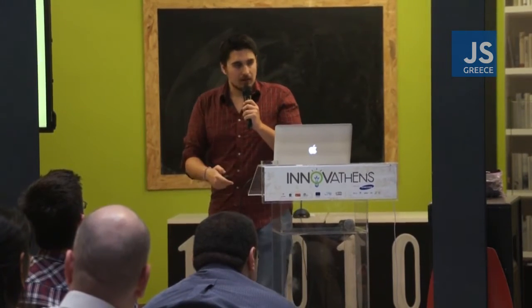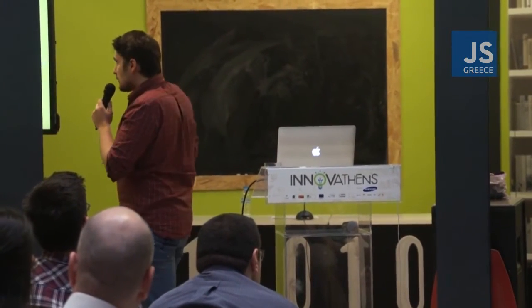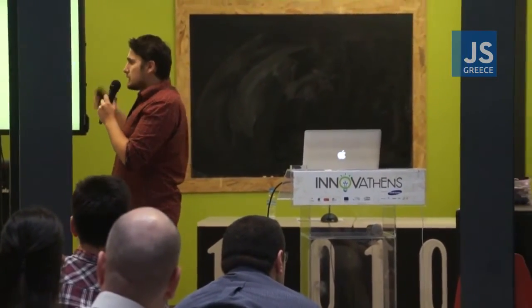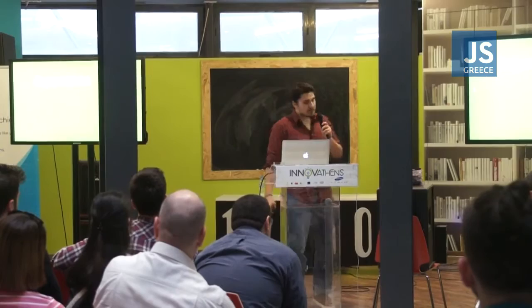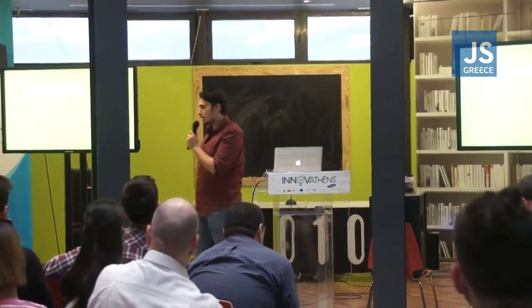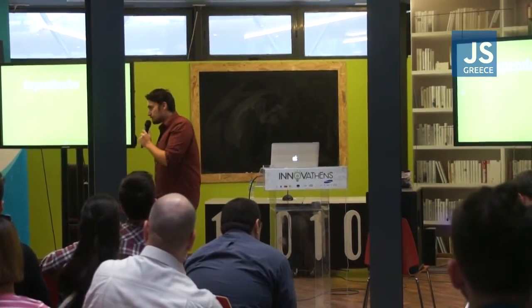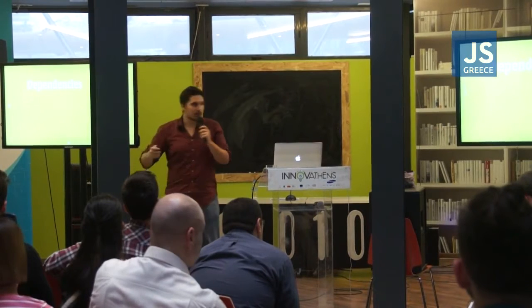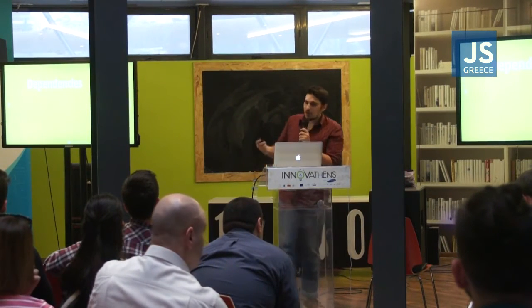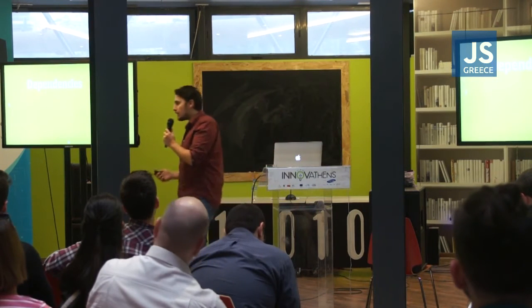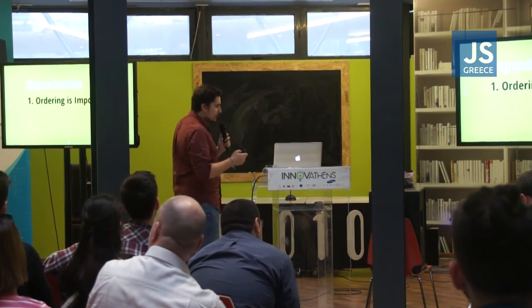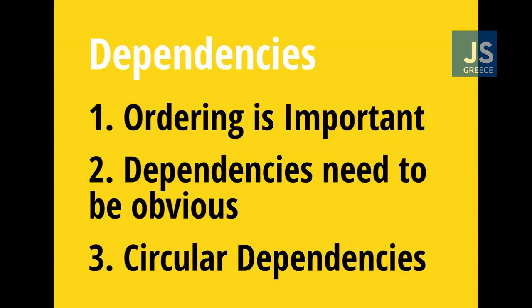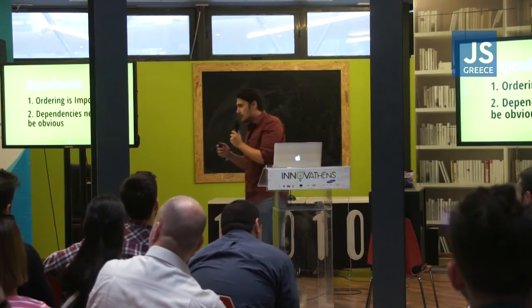The one bit this doesn't solve so well is dependencies. We talked about the slider — it's still not easy to know that the slider is dependent on that counter module. So when we're putting our final file together using a concatenation method, we really need to know this stuff beforehand in order to know in which order to put things. With dependencies, ordering is important and dependencies need to be obvious so that you can put them together and make them work.